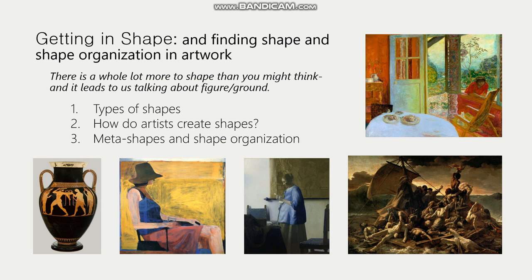Welcome back to unit two. In this unit so far we talked about ancient civilizations, the art of ancient civilizations, the bronze age collapse, the art of the next period — the axial age or archaic age. That led to talking about Greek ceramics, and then a whole unit on ceramics, and then an in-depth discussion about the development from black figure to red figure. That inevitably leads us to talking about shapes.